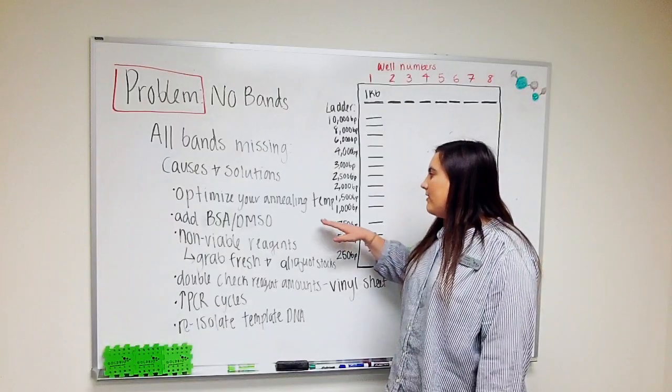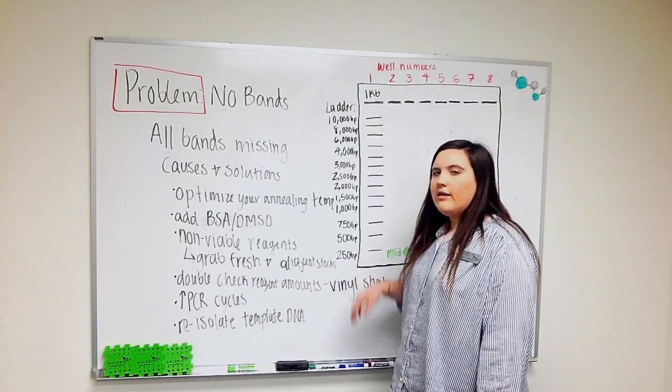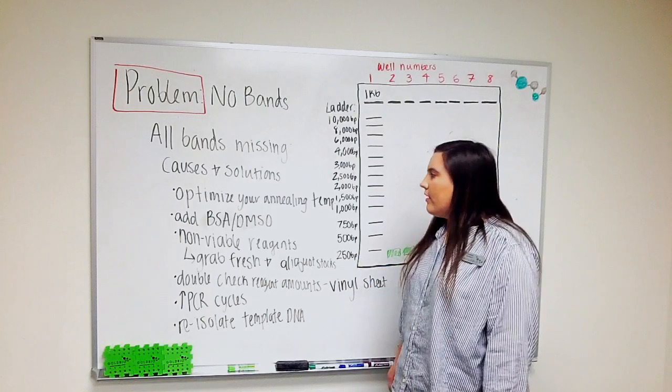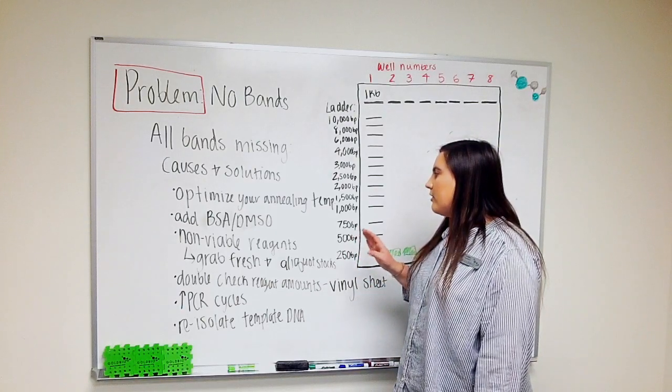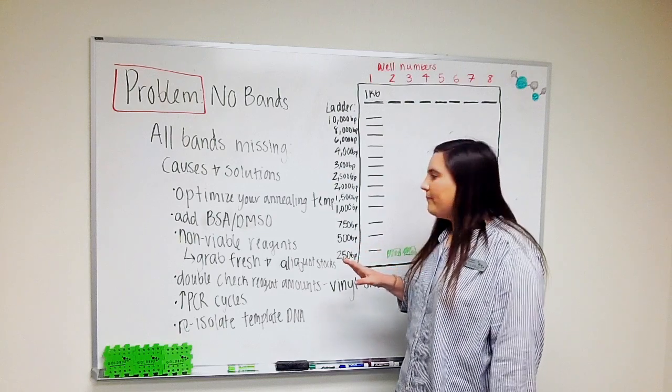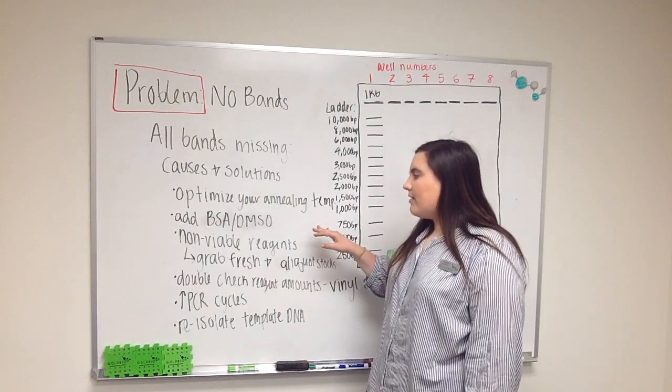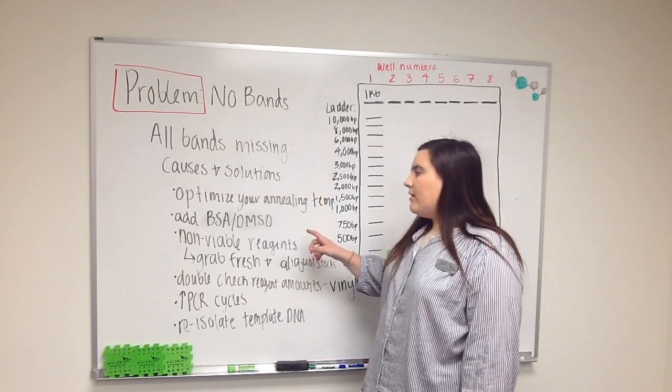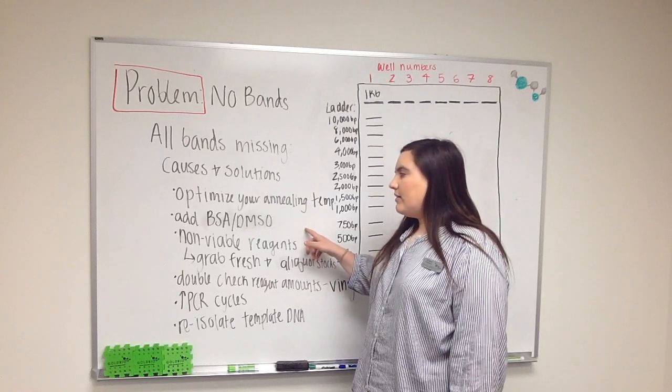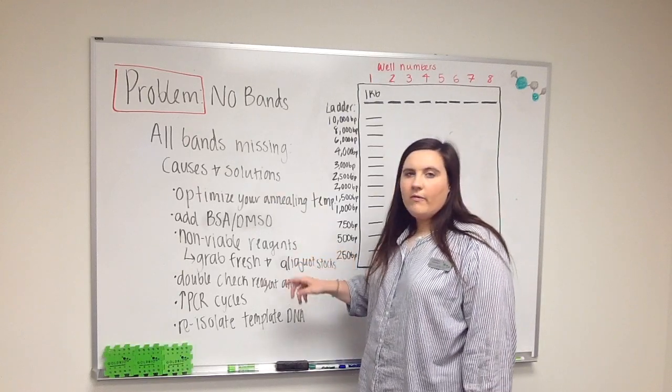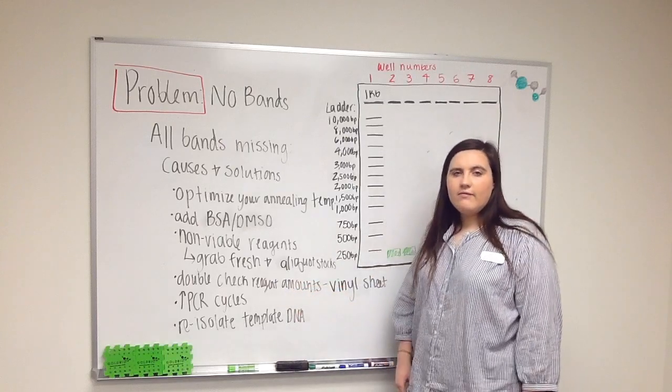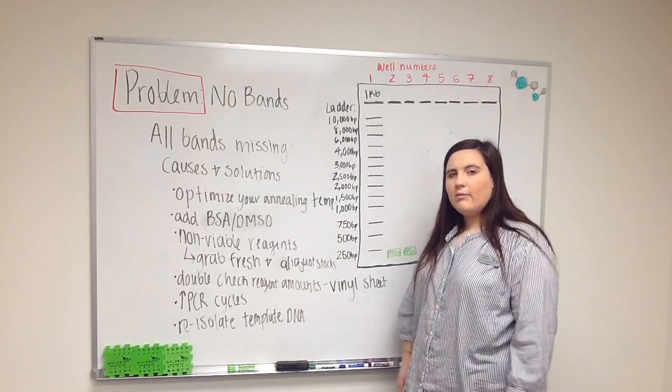One thing you can do is optimize your annealing temperature by checking the melting temperature of your primers and making sure that annealing temperature is optimal for what you're trying to amplify. You could also try adding BSA or DMSO. BSA will prevent your reagents from sticking to the vial. DMSO will prevent any GC-rich content from folding up on itself and not being able to be amplified.